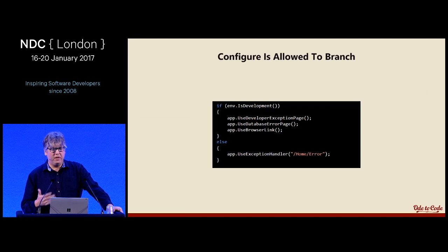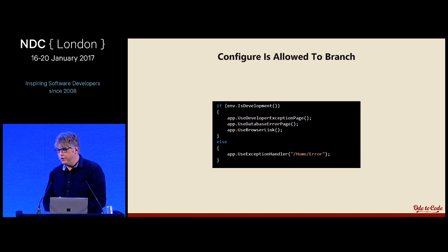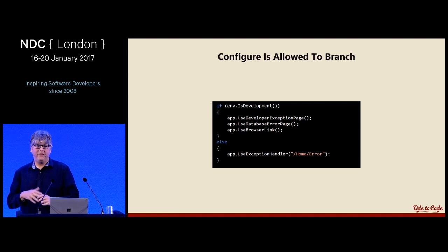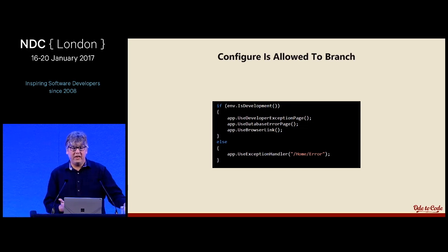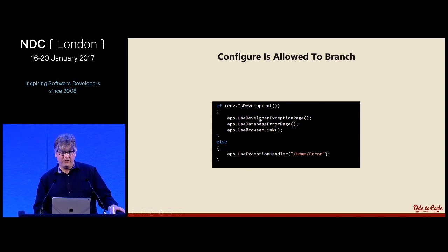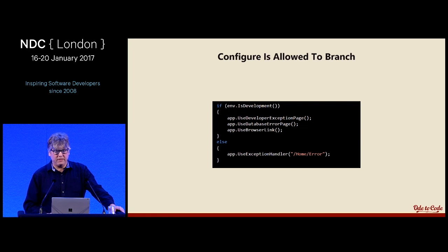The one exception is in middleware. When configuring middleware inside Configure, I still want a high-level overview of modules installed. If special configuration is needed, pass options objects through an extension method. But I do allow the Configure method to branch — so it's apparent that in development we're using these three pieces of middleware, but in production we're using a different piece that behaves differently. I think that's fine.